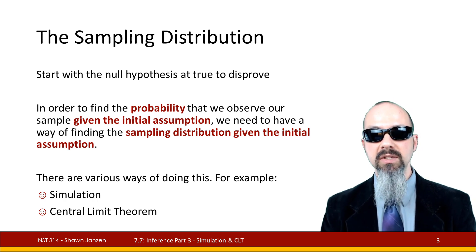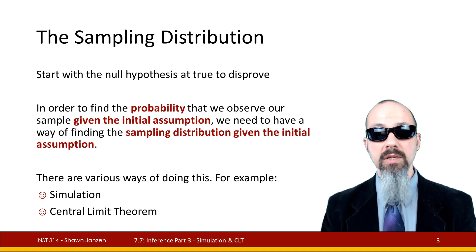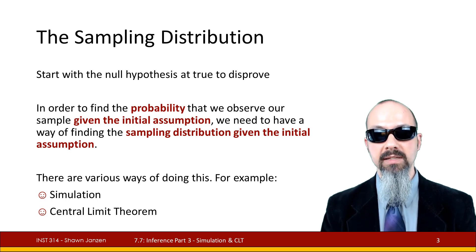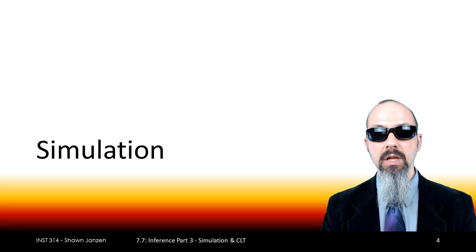There are a couple of ways of doing this. One, we can use simulation, and two, the central limit theorem to help us approximate the sampling distribution. Let's start with simulation.